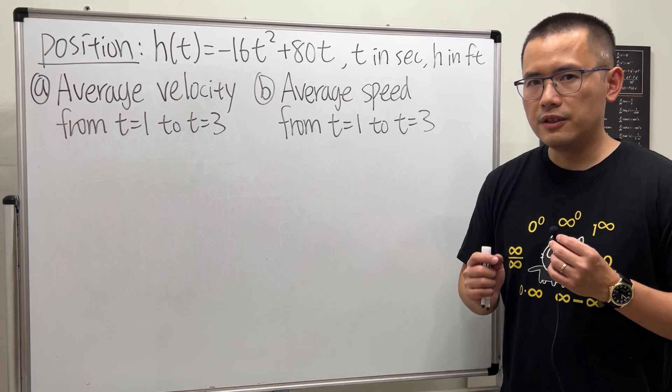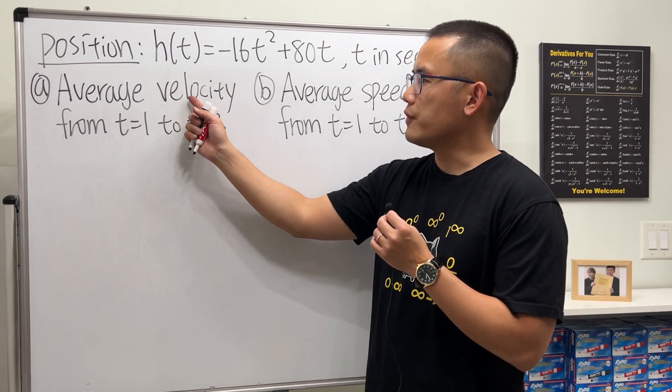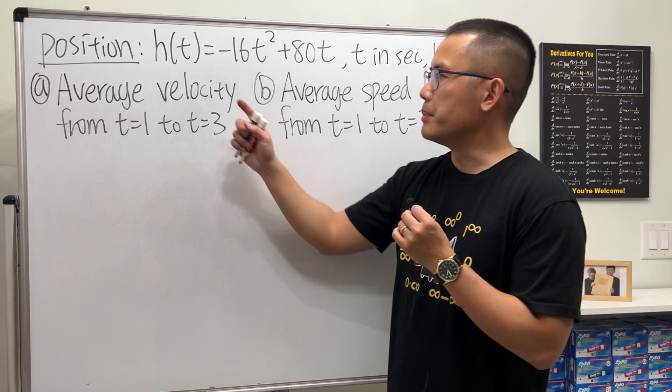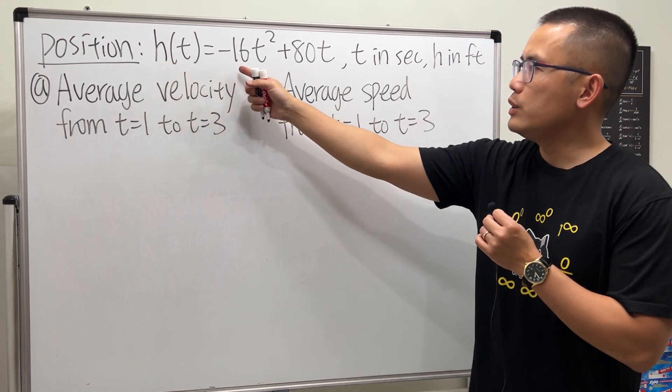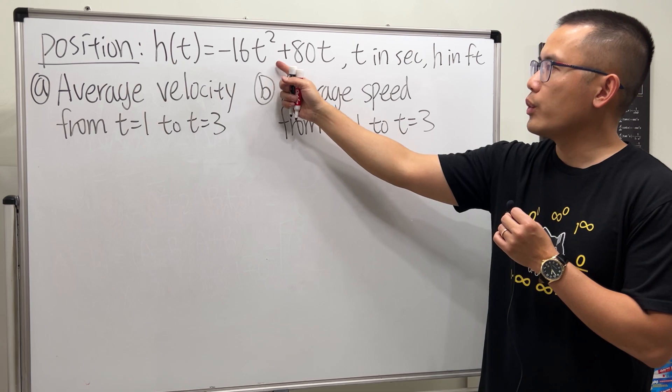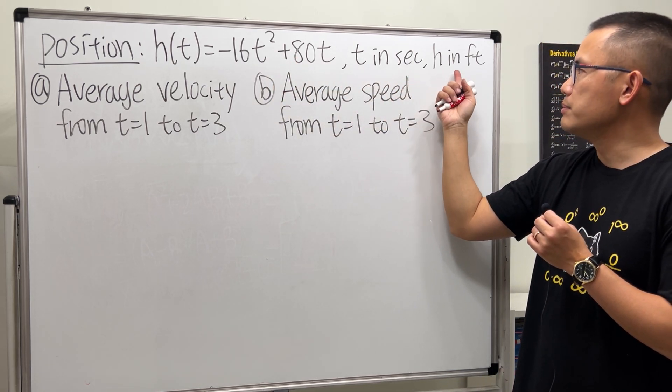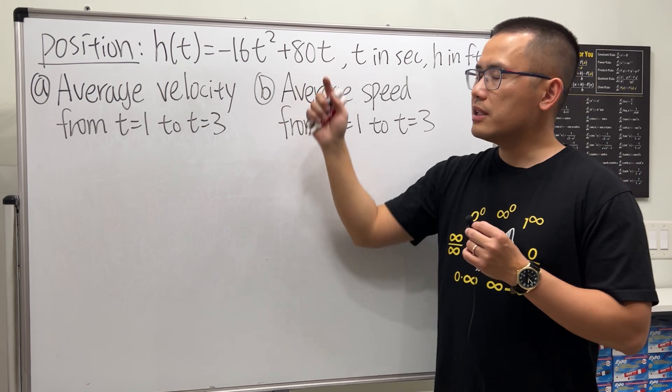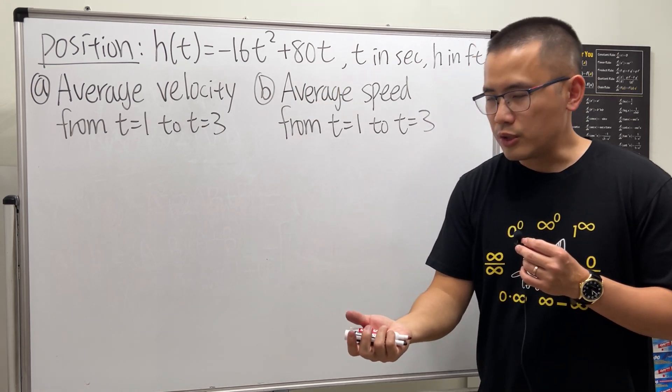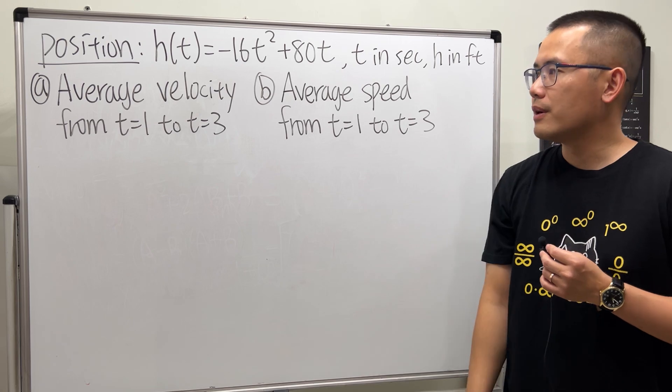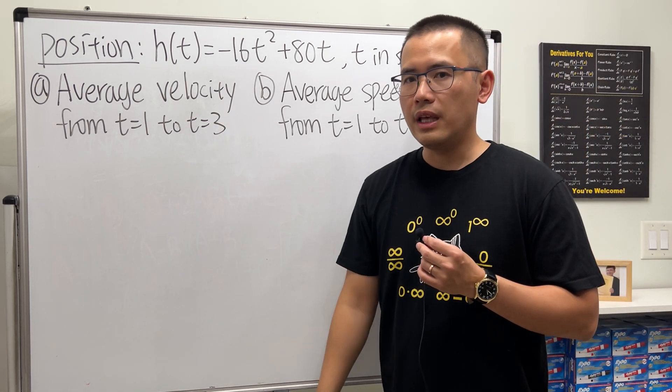In this video I will talk about the difference between finding the average velocity versus finding the average speed. Here we have the position function h(t) = -16t² + 80t, where t is measured in seconds and h is measured in feet. This kind of equation is just like you launch something from the ground to the air and then it drops back down.